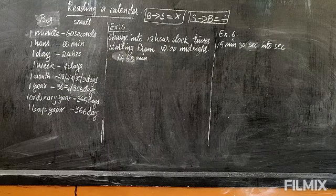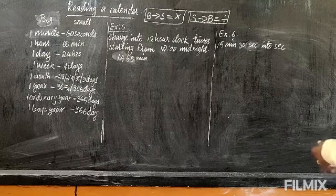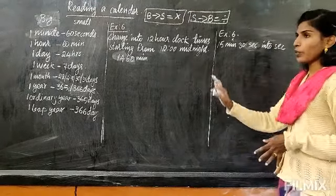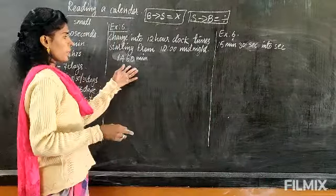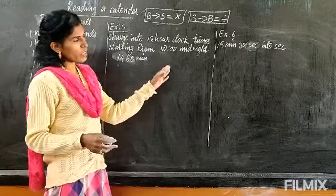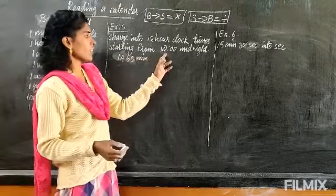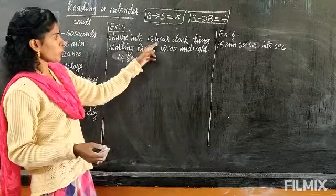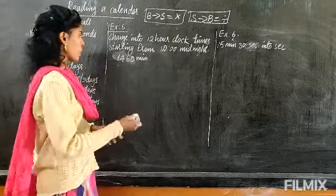Now the next one: change into 12 o'clock times, starting from 12 midnight. This is given in your exercise, given in different forms — don't be confused. This is actually given in minutes and you have to convert into hours and minutes. Then after converting into hours and minutes, you will calculate the time from 12 midnight and write the time. 12 o'clock means you have to write a.m. or p.m.